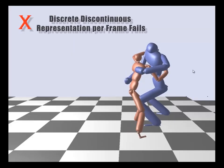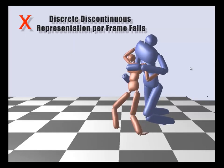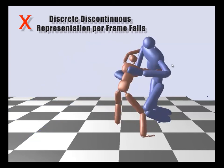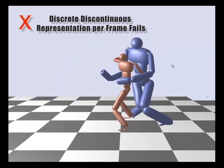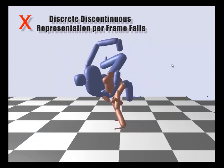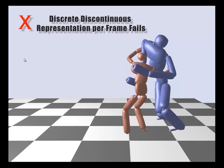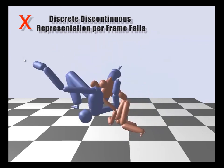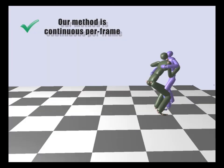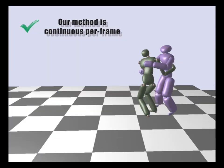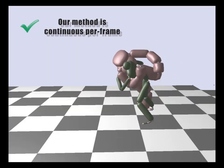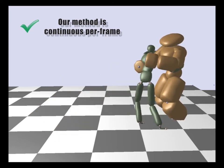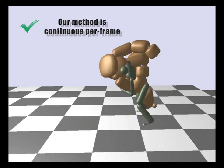Previous motion adaptation schemes based on spatial relationships require offline optimization due to their discrete representations. Running them per frame results in jerky movements. Our method is designed such that a continuous animation can be produced, although the poses are recomputed per frame.